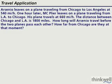One hour later, MC Plyer leaves on a plane traveling from Los Angeles to Chicago. His plane travels at 660 miles per hour. The distance between Chicago and LA is 1,800 miles.